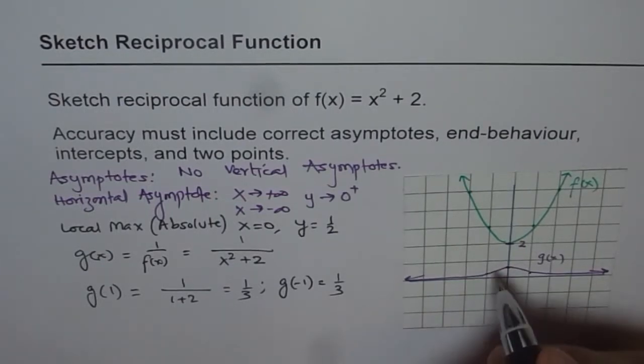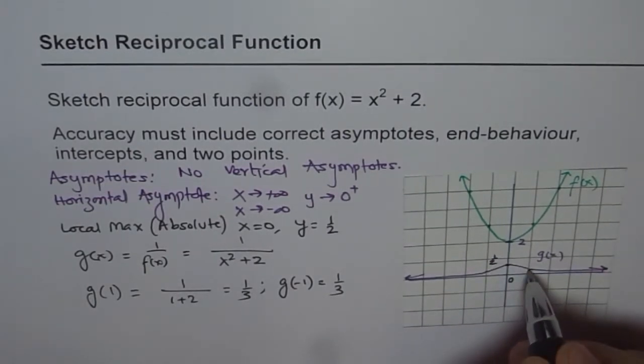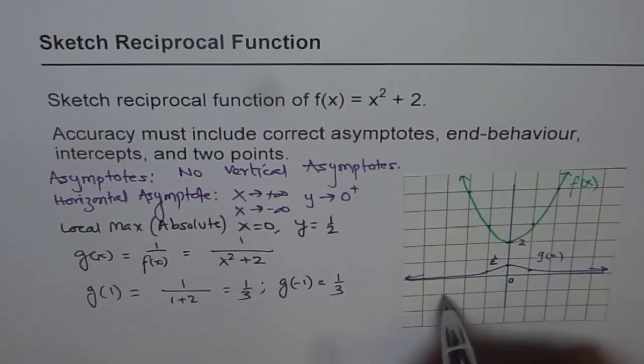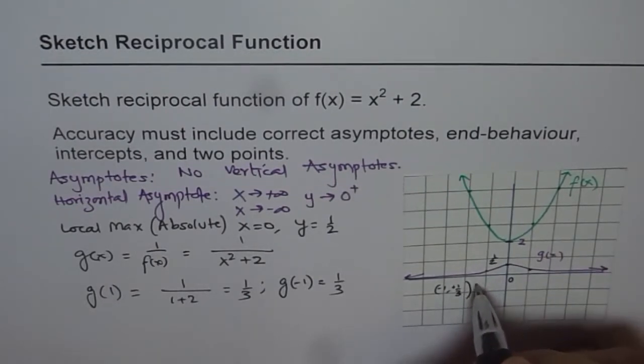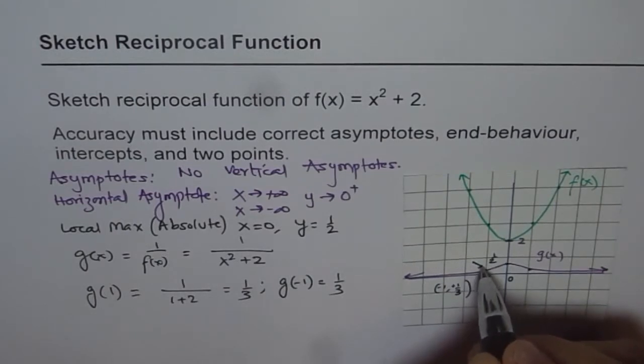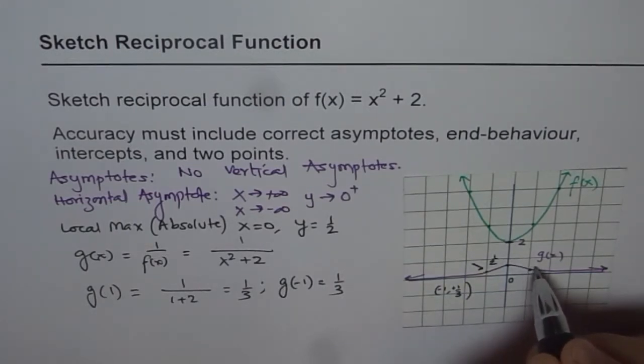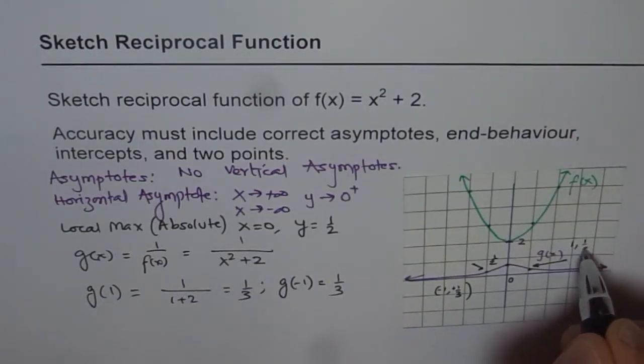So we have this point which is at 1/2, x = 0, and these points here they are at 1 and -1. And 1/3 is this point, I should have written there anyway, and this point here is (1, 1/3).